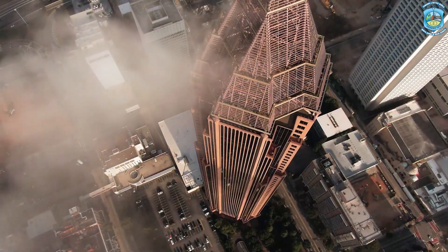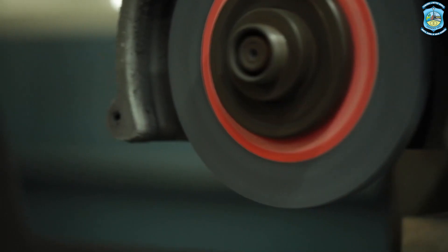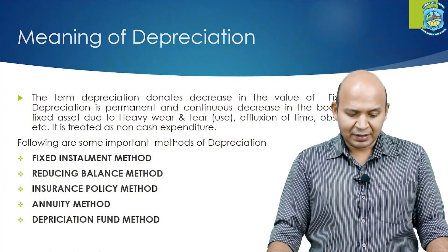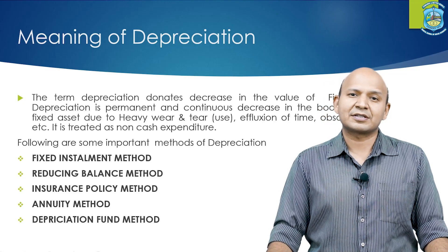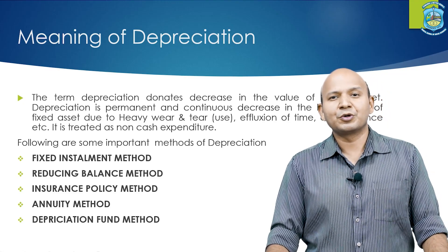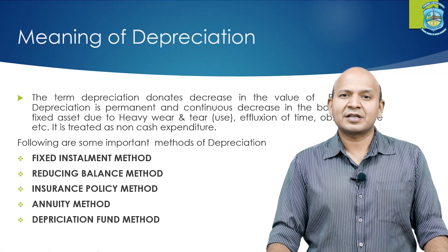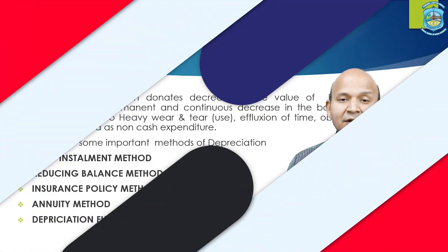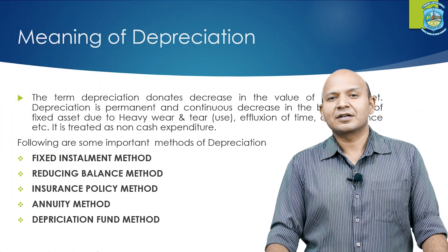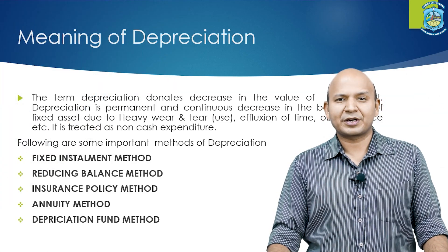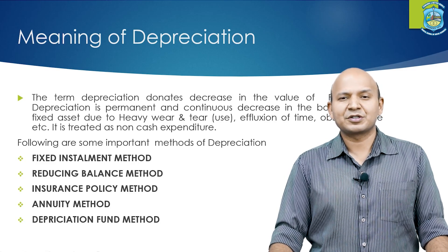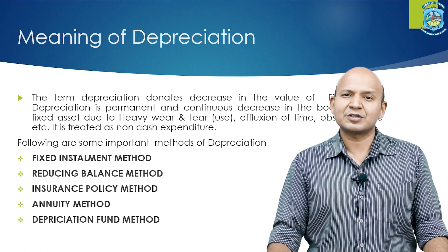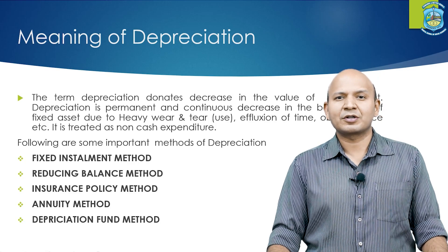For example, land and buildings, plant and machinery, furnitures and fixtures, etc. Depreciation is the permanent and continuous decrease in the value of assets due to heavy wear and tear, obsolescence, and affliction of time. Heavy wear and tear means the asset is being used for production. Affliction of time means the passage of time, whereas obsolescence means a change in fashion or change in trend.